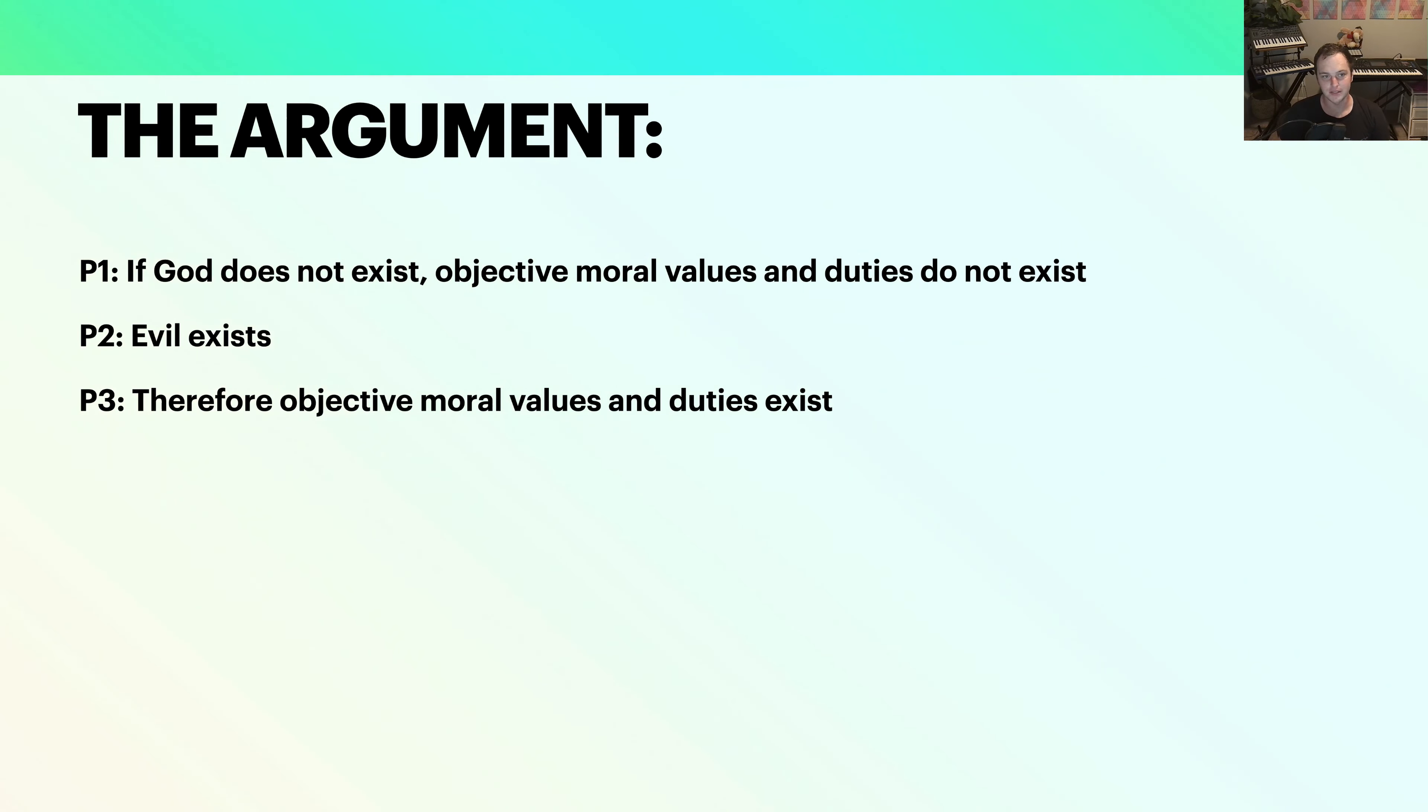One way you can argue this is if objective evil exists, then one has an objective duty to avoid evil or to go after good, which in some ways could be framed as the absence of evil or as something in and of itself that's bad. There are different ways to look at this. All that matters is there's stuff that one ought to avoid, one ought not to do, and stuff that one ought to do. And as a result, one has objective moral values and duties, and therefore God exists if God grounds these things.